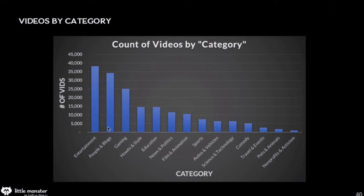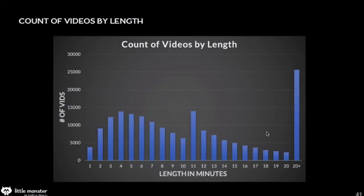He studied a lot more entertainment, people, and blogs videos, and a lot less of pets, non-profits, and travel — probably just based on the data he got. Category is not too important. Looking at the count of videos by length, a lot more of the videos studied were over 20 minutes. There's a peak at 11 minutes and another peak at over 20 minutes — and you can do more ads on videos over 10 minutes. We also saw that videos over 10 minutes were generally getting more watch time.